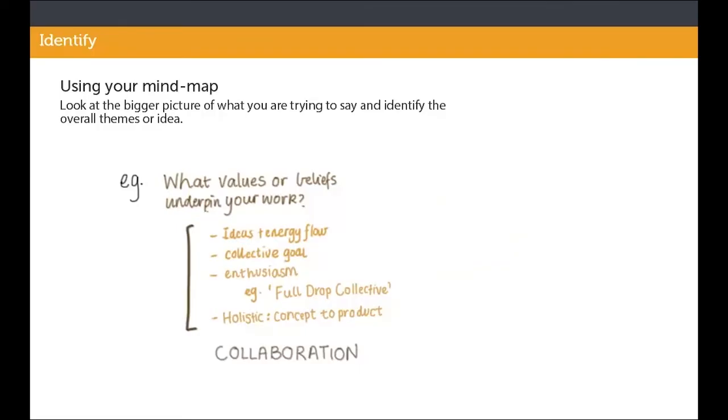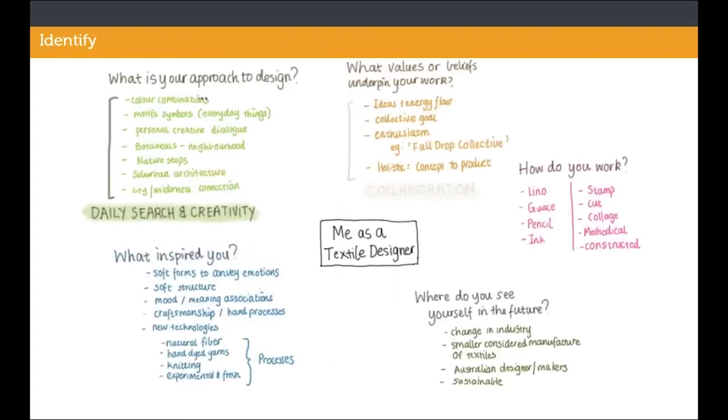Here is an example of how you would identify one main theme from each list that will become the topic sentence for each paragraph. In this case, all the ideas are about working with other people and sharing ideas, so a useful word here is collaboration. This becomes the topic of your paragraph. Notice how the main themes have been identified for each part of the mind map.